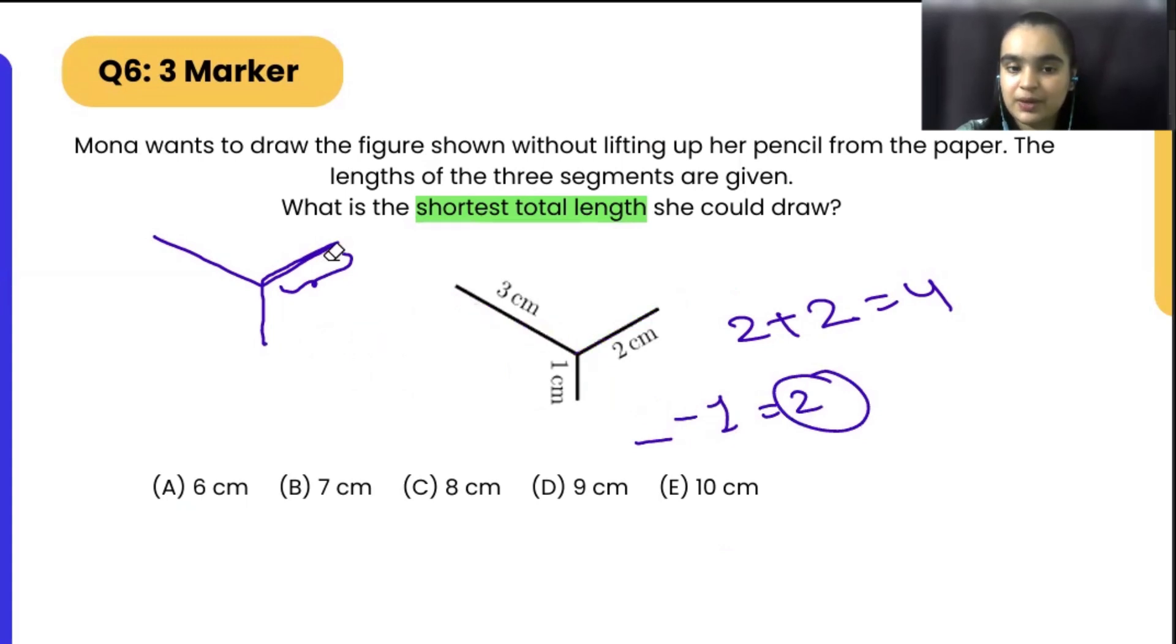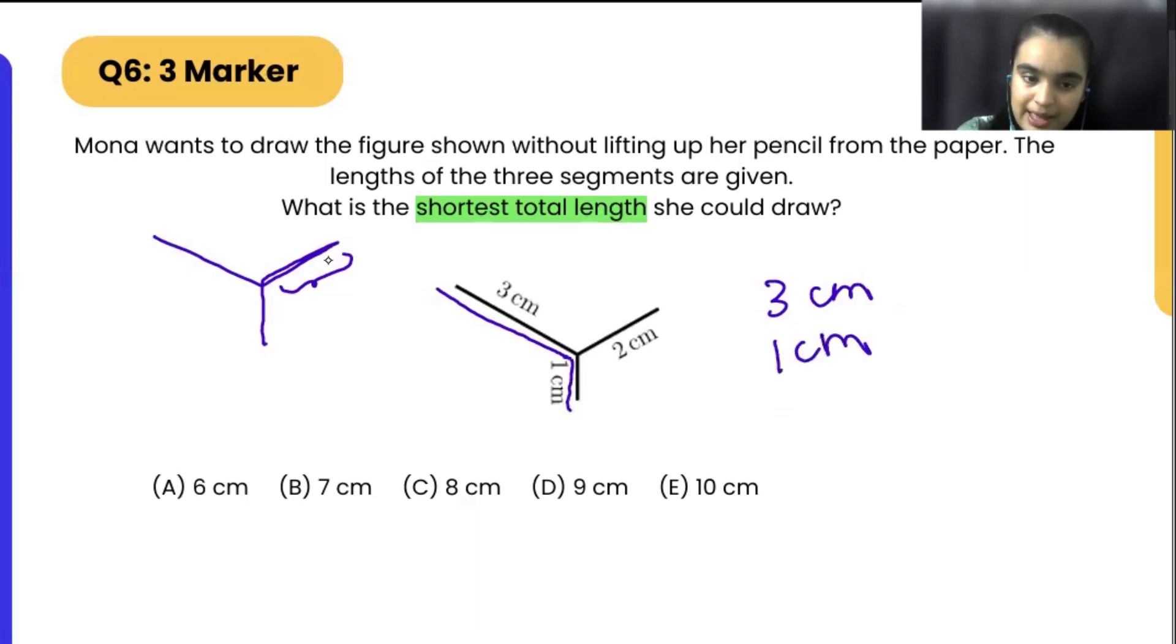Right? So what we are going to do here, we will try to overlap number one. So how we can draw? I am starting from three. Three centimeters. Then we can go one. And then again, we have to go up, right? So we are overlapping this one centimeter and then two. That will give us the answer as seven centimeters. That is our correct answer.